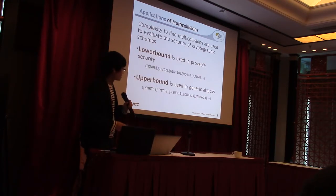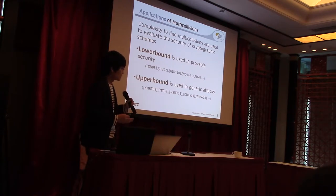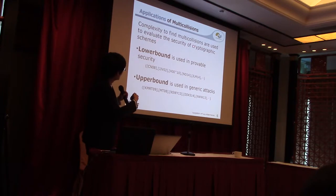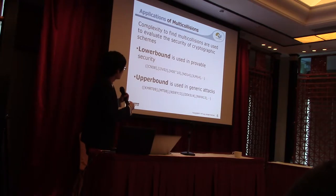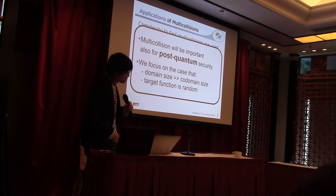The collision finding problem is one of the most important problems in crypto, and multi-collision is also an important problem in crypto, especially for symmetric cryptography. Complexities to find multi-collisions are used to evaluate the security of cryptographic things. For example, lower bounds are used in provable security, and upper bounds are used in generic attacks. Multi-collision will be important for post-quantum security.